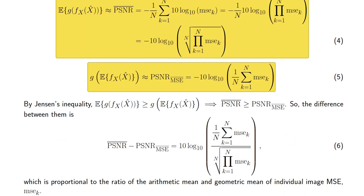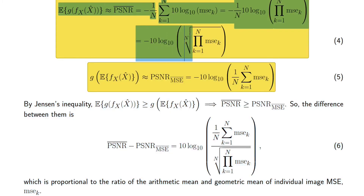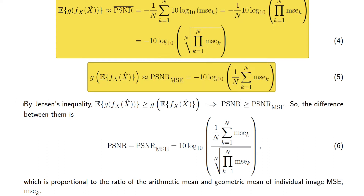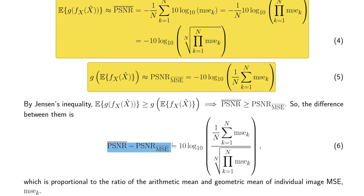The first one, shown in equation 4, turns out to be the PSNR of the geometric mean of the sample MSE values. On the other hand, the second one is the PSNR of the arithmetic mean of the sample MSE values. By Jensen's inequality, we can conclude that equation 4 is always greater than or equal to equation 5, and their difference can be written as in equation 6.